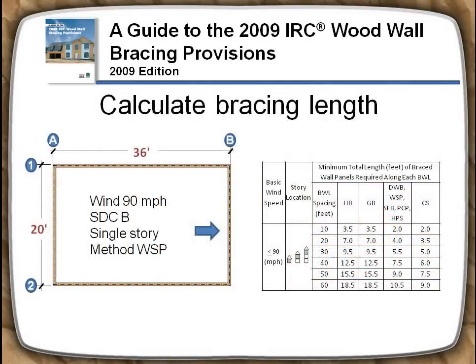The amount of wall bracing required on a braced wall line depends upon the length of the wall line, the braced wall line spacing, the seismic design category, wind speed of the local area, which story the wall line is on, and the method of bracing used. Because there are multiple factors, required lengths of bracing have been placed into tables.